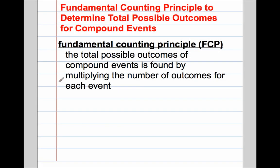This final video in the series for this unit on probability will be on using what we call the Fundamental Counting Principle. This is another really helpful tool in mathematics whenever we're trying to determine the total possible outcomes for compound events. As we learned earlier, compound events are more than one event happening, so we're trying to figure out how many total possible outcomes would happen.